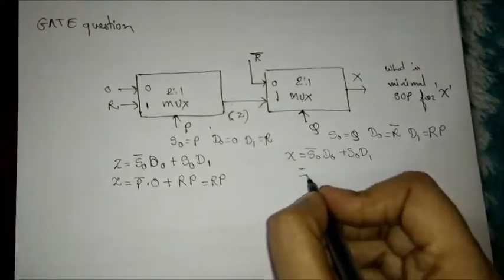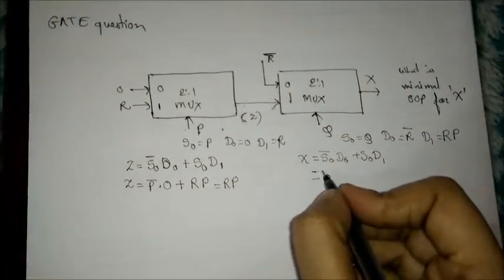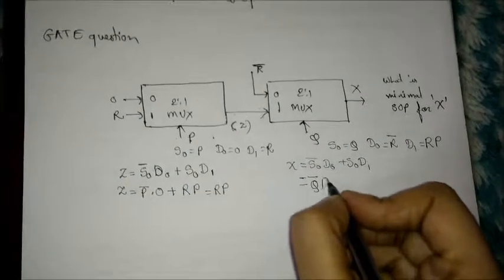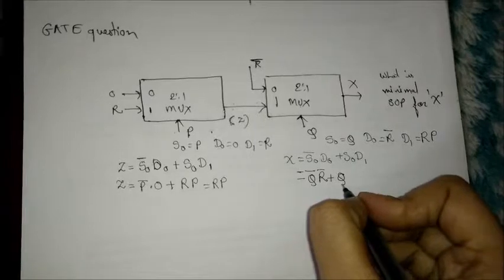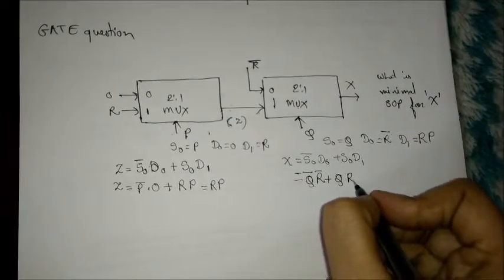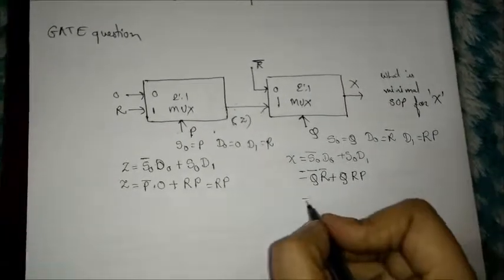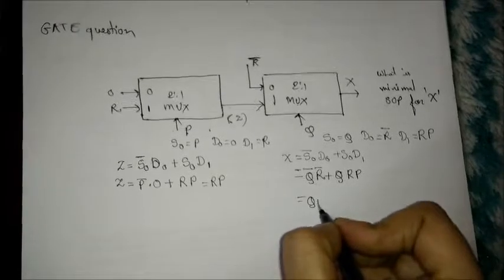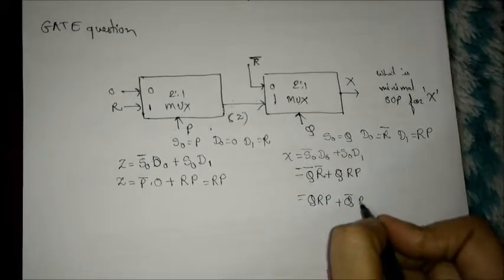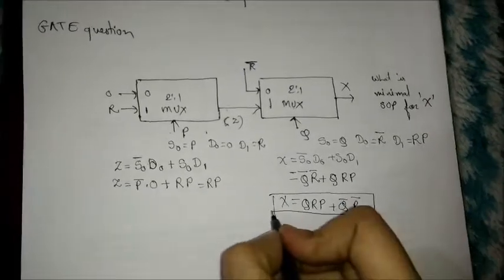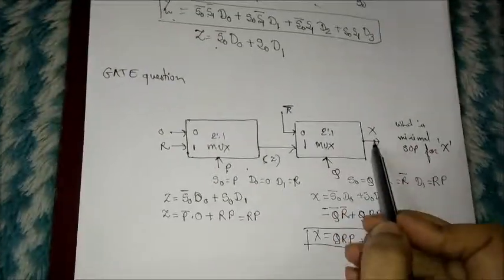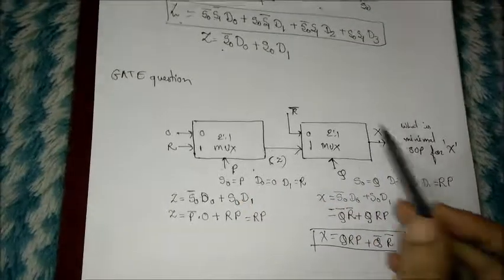So RP is D1. Now substitute these values. S0 bar is Q bar, D0 is R bar, S0 is Q, and D1 is RP. So the final equation becomes QRP plus Q bar R bar. This is the characteristic equation or the output X for this MUX.